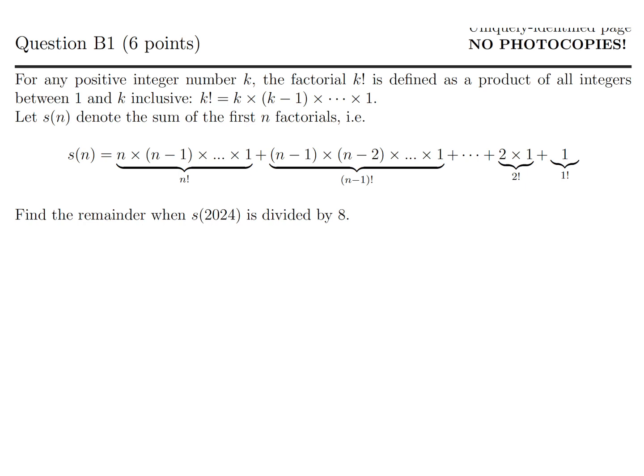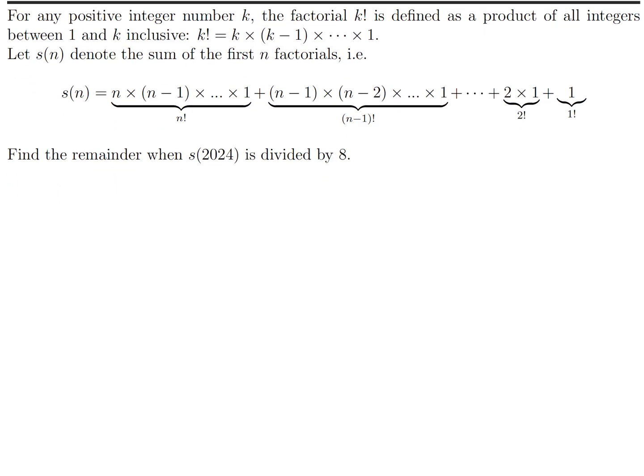Find the remainder when s(2024) is divided by 8. So s at n, according to their definition, is n factorial plus n minus 1 factorial plus n minus 2 factorial and so on all the way down to 2 factorial and 1 factorial. That's the definition.